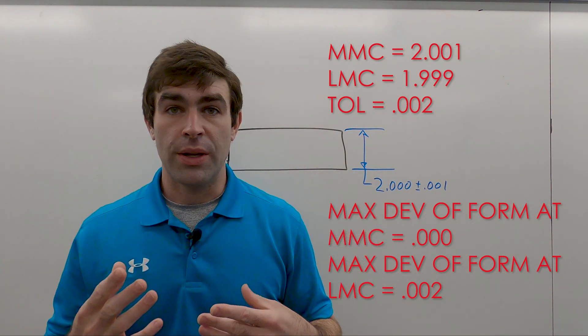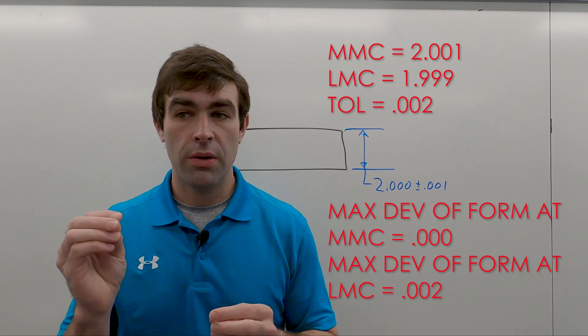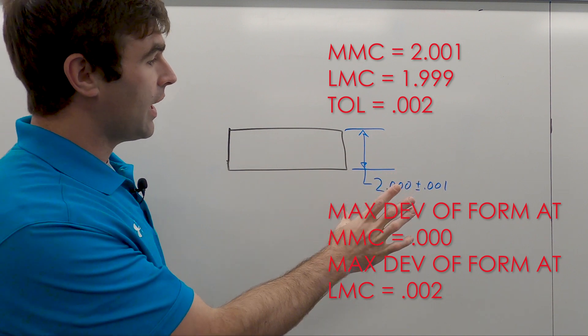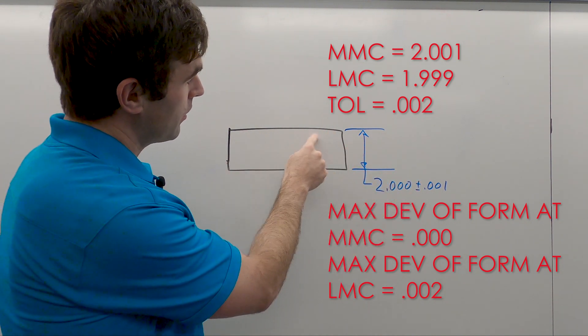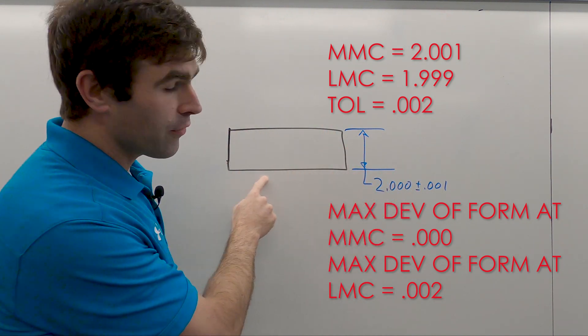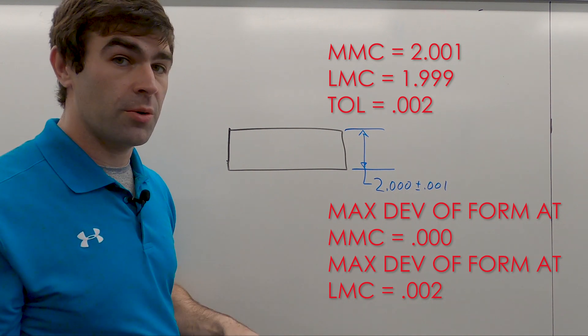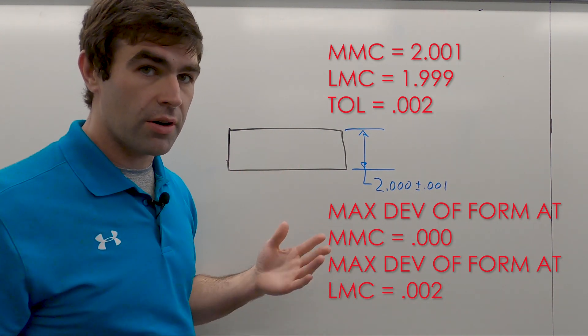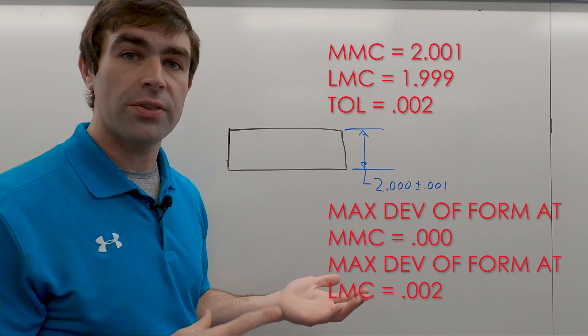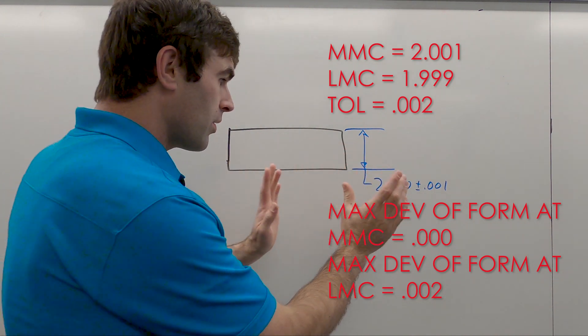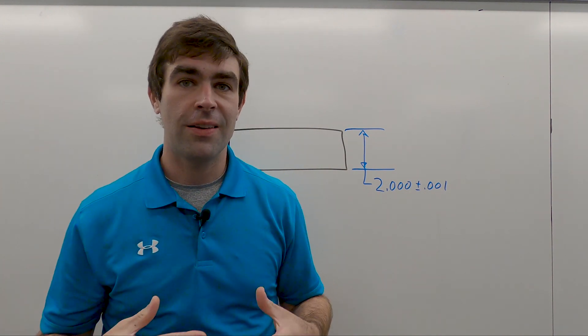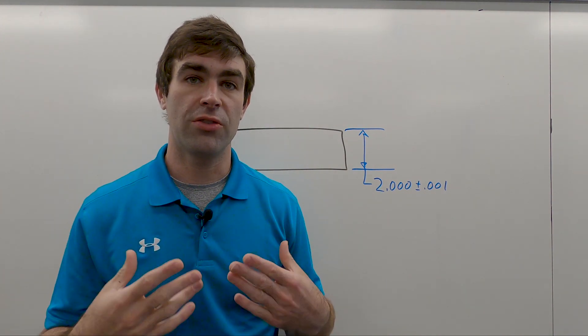We can save some money if we could separate the form from the size, because as it stands right now we're controlling the form at the top and the form at the bottom when we really don't need to. The bottom of a surface plate could be whatever; we're going to use adjusting screws to get it level. So controlling things with just a limit of size is going to end up being more expensive to get what you want.